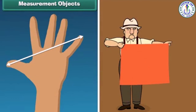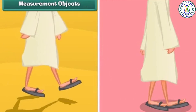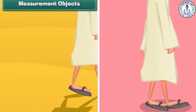Objects can be measured in different ways. You may use your hand span or you may use your arm. You can even use your step for measurement, or simply your feet can be used for measuring distance. All these can be used to measure the length.